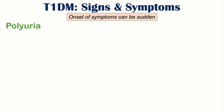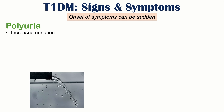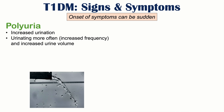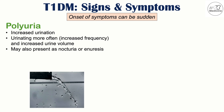Some signs and symptoms of type 1 diabetes include polyuria, which is increased urination — more specifically, increased frequency and increased urine volume. This may also present as nocturia, which is urinating at night, or enuresis, which is bedwetting. Because this can occur in children, secondary enuresis can occur — meaning a child who had stopped bedwetting suddenly starts again — which can be another finding in patients with type 1 diabetes.